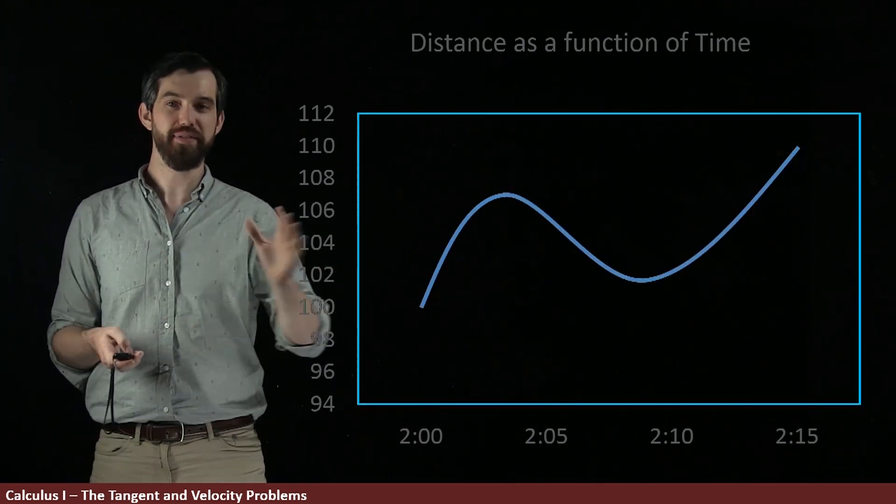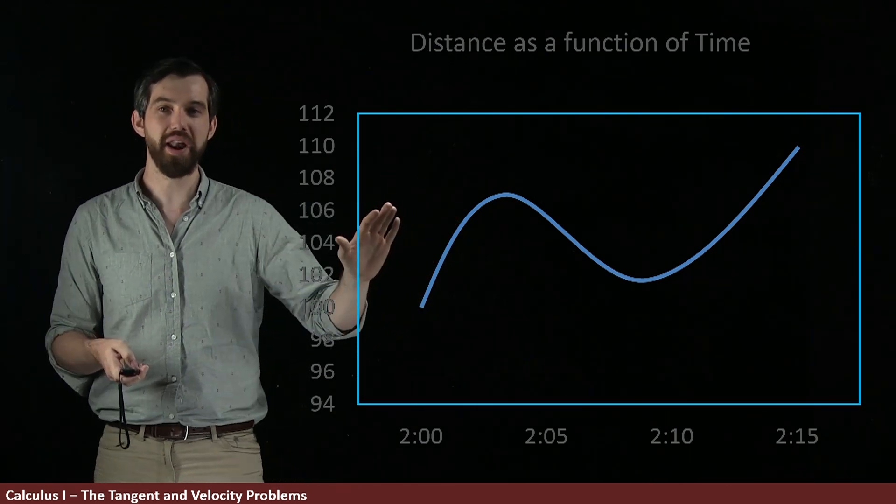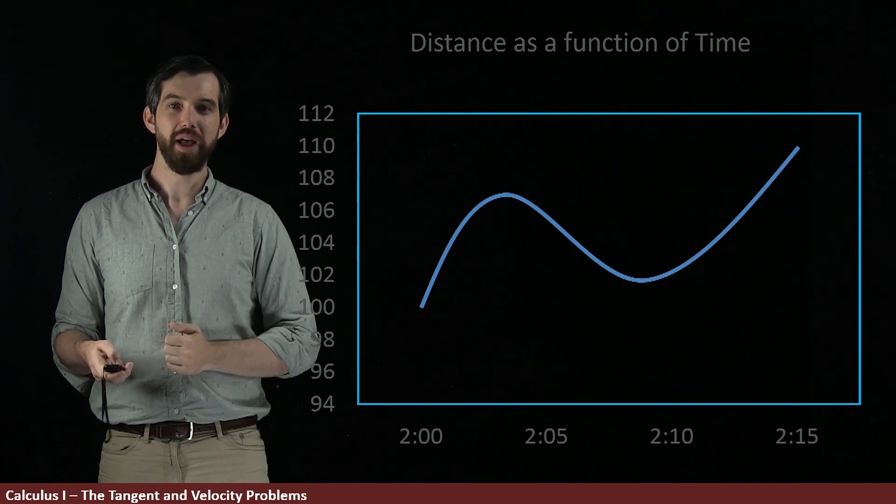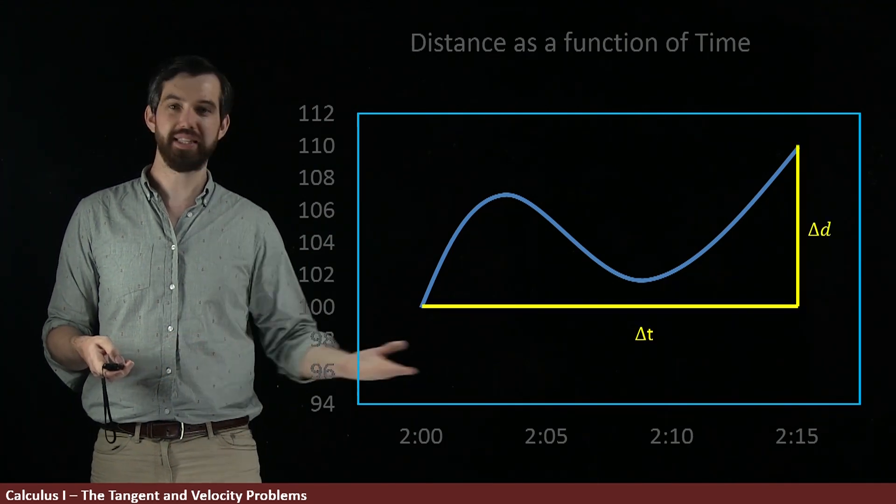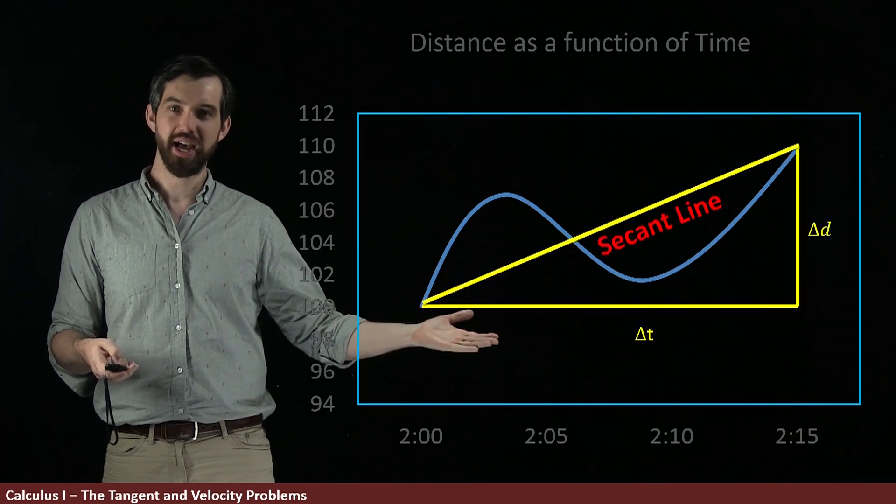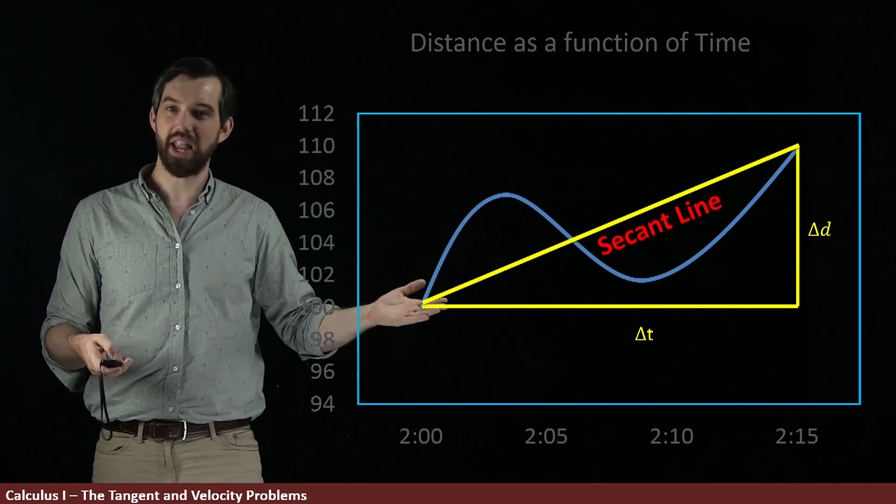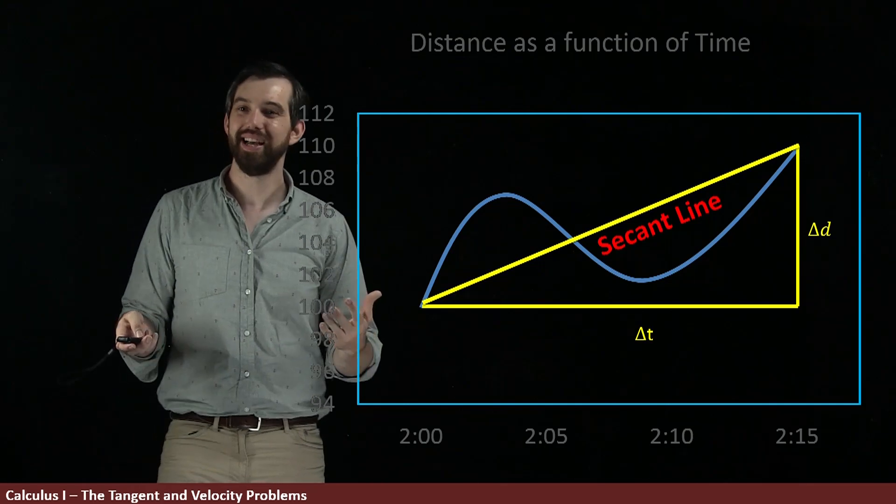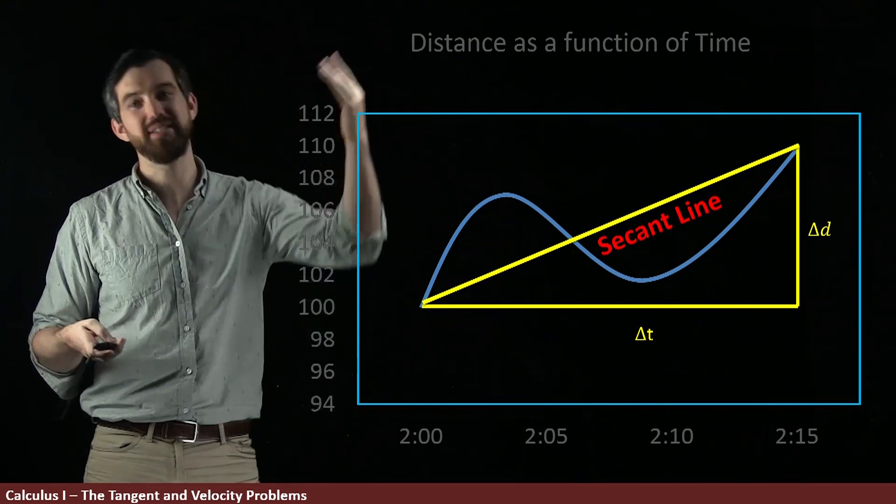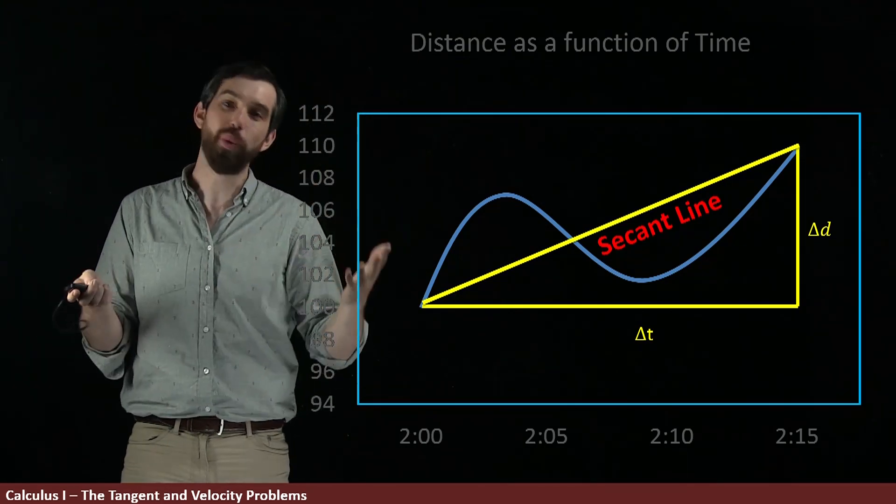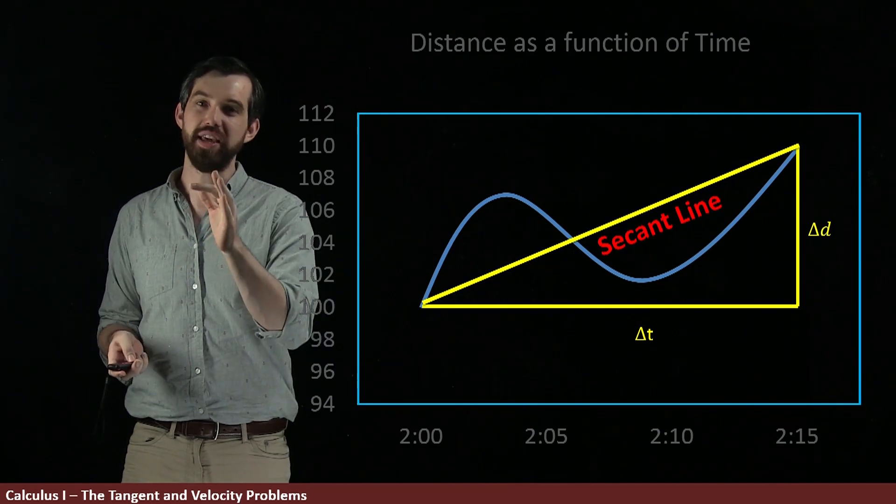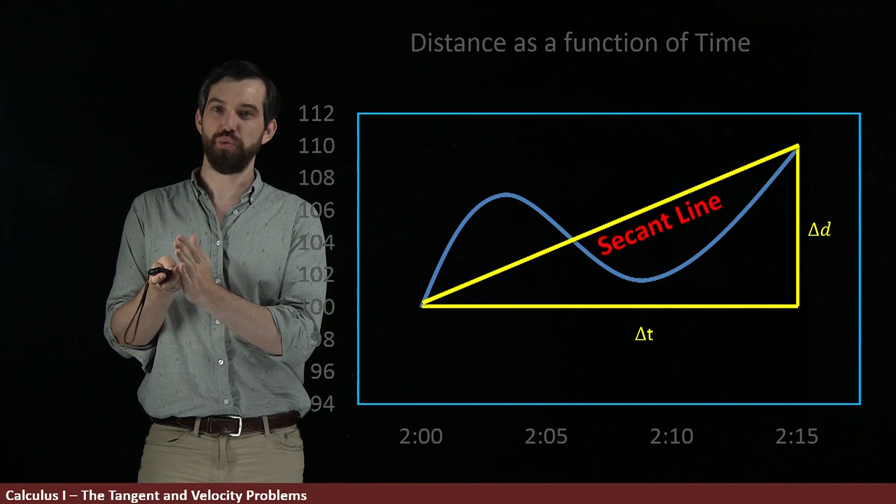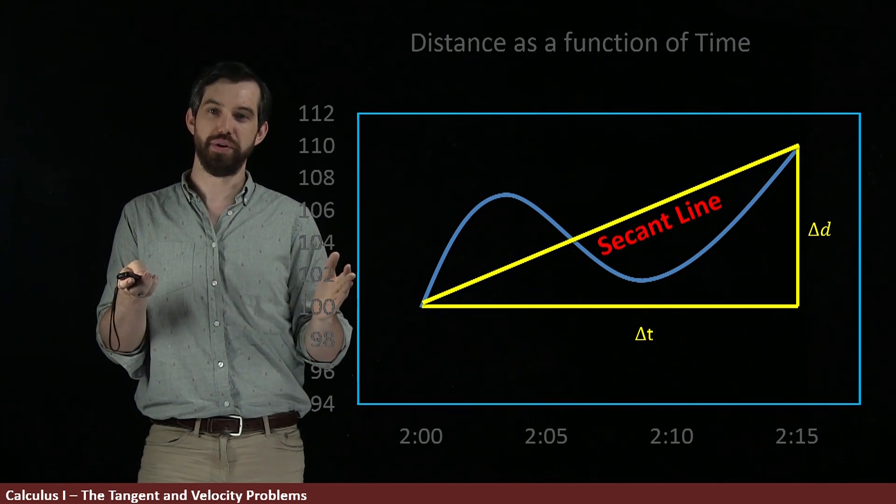And I can do the same story if I put in, for example, this weird curvy one. If I want to figure out what its average velocity is from 2 to 2:15, well, I just come along, I put in the same delta T, the same delta D, I'm going to have that same secant line. And again, it's the slope of that secant line. So an average velocity cannot tell whether you're accelerating and decelerating and doing all sorts of weird things. All that the average velocity tells you is this sort of net change between the start and the finish of your interval.